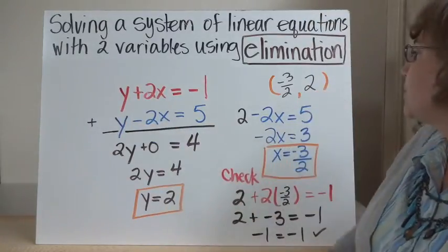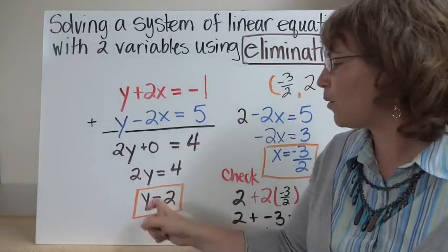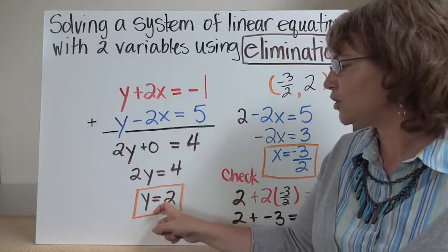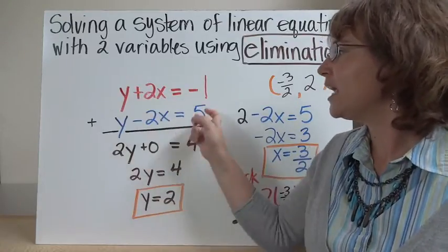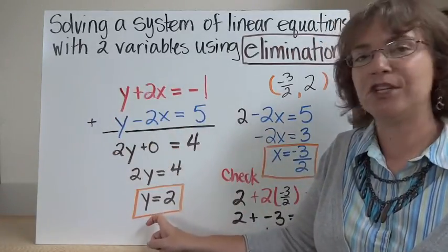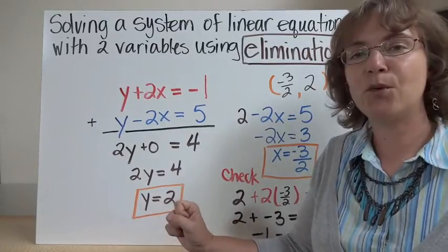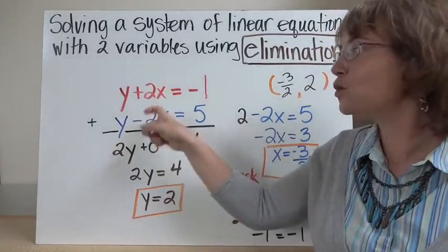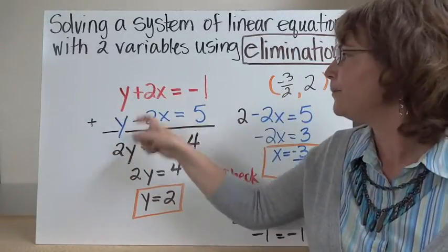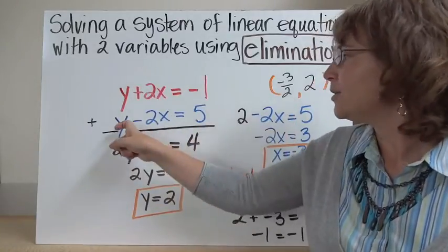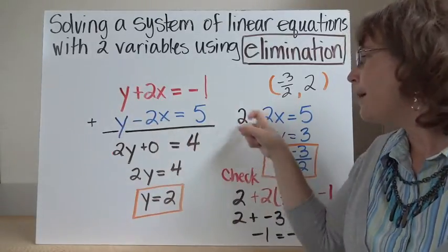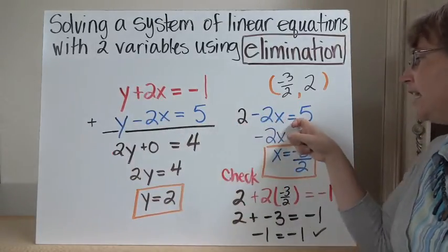Now we have y is equal to 2, and we need to figure out what x is. When y equals 2, what is x — what's our x coordinate? We could go back and try to eliminate the y's, but I like to use substitution. Once I have one of these coordinates, I go back into substitution. I choose one of these equations — it doesn't matter which one, because our solution works for both of them. I'm going to choose the second one. So instead of y, I'm going to put what I know y equals: 2.